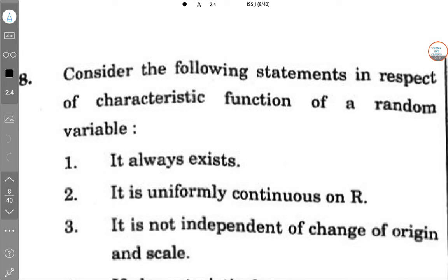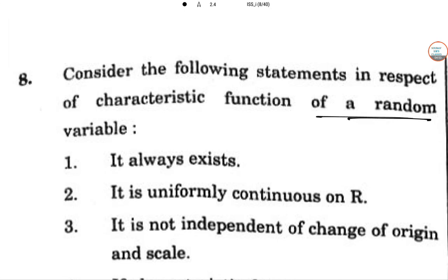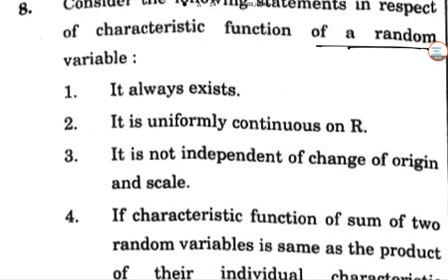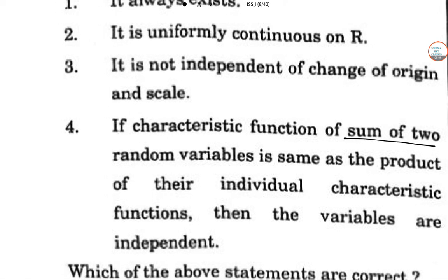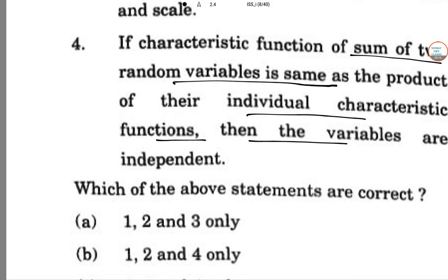Now we proceed to question number 8. Consider the following statements with respect to the characteristic function of a random variable: (1) It always exists. (2) It is uniformly continuous on R. (3) It is independent of change in the origin and scale. (4) If the characteristic function of sum of two random variables is the same as the product of their individual characteristic functions, then the variables are independent. Which of the above statements are correct?